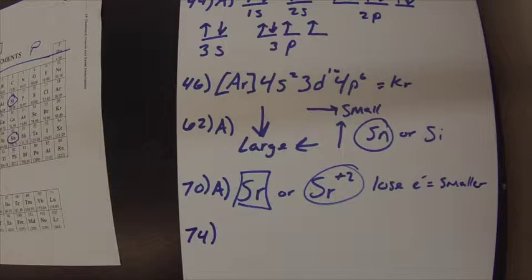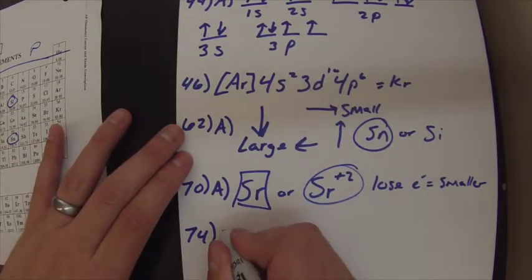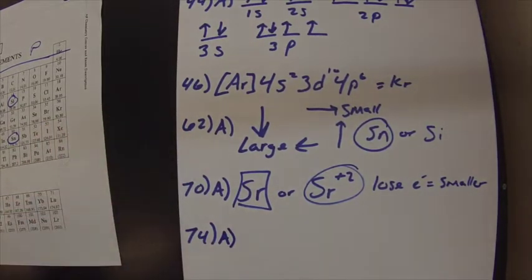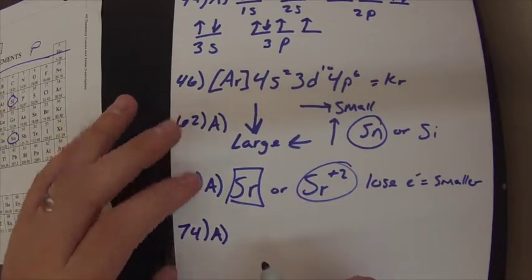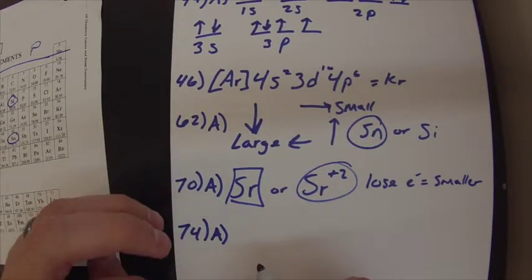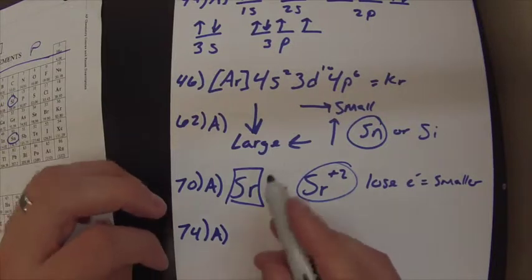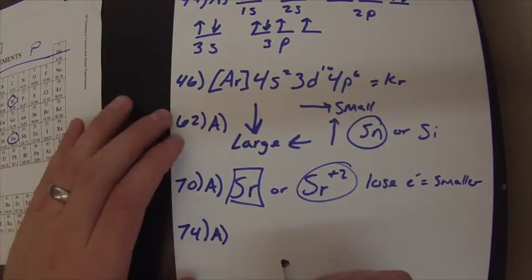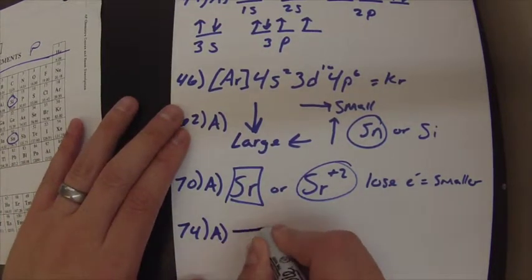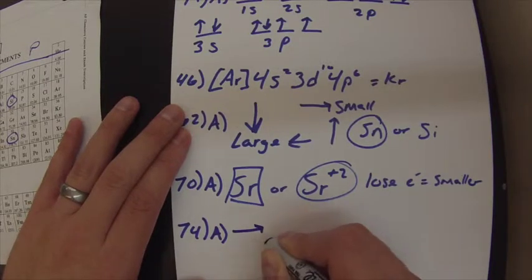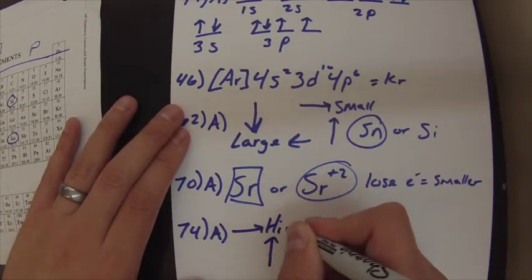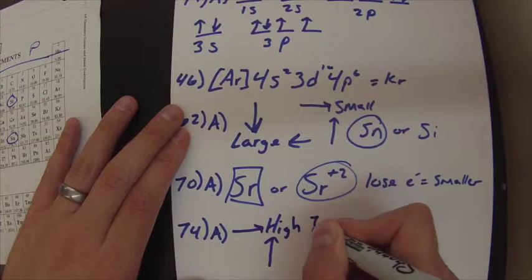Alright, 74 says which is going to have the higher first ionization energy? Again, I'll stick with A. This one's actually kind of tricky, so I'm glad I chose A. So this is actually the opposite of size.